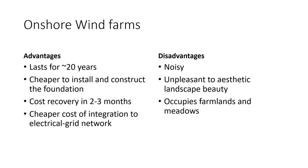The relative merits of onshore wind farms: the main advantages are that onshore wind farms last approximately 20 years, they are cheaper to install and construct foundations, cost recovery can be met in 2–3 months of installation, and integration to the electrical grid network is cheaper. The main disadvantages are that these are noisy, sometimes unpleasant to the aesthetic beauty of the landscape, and they occupy farmlands and meadows which could otherwise be utilized for producing crops.